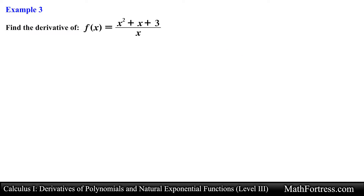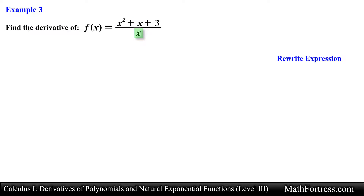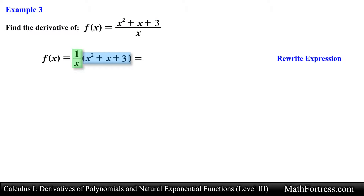Find the derivative of f of x equals the quantity x squared plus x plus 3, all over x. Like the previous example, this function seems very complicated and you might feel that you do not have a specific rule that you can apply to find the derivative. Let's see if we can first rewrite this function into a derivative friendly form. Recall that you can think of division as another form of multiplication — in this case, the numerator being multiplied by 1 over x. Viewing the function this way, we can distribute this expression to each of the terms in the numerator.